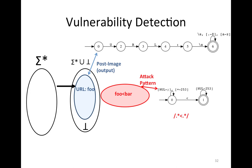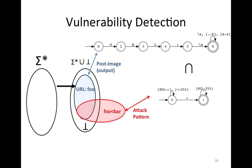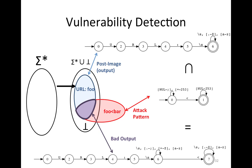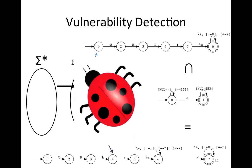Given an attack pattern — simplified so the automata is not too complex — the attack pattern describes all strings that contain a certain substring, such as foo-this-then-bar, which is considered a bad string. We intersect the two automata and check if the intersection is not empty. In our case, the intersection is not empty, meaning there is a string output by the function that is also considered bad by the attack pattern. If we find this, we report a bug.